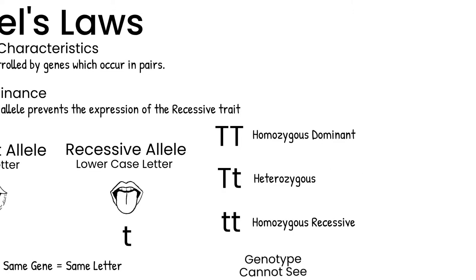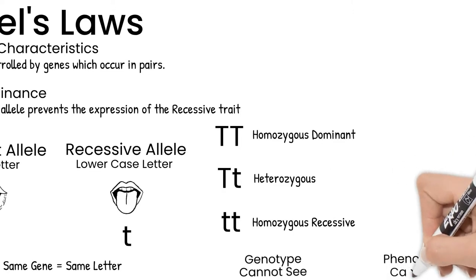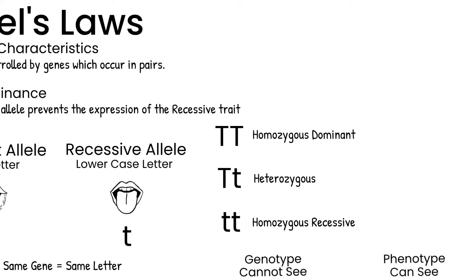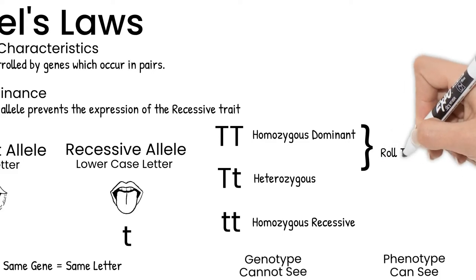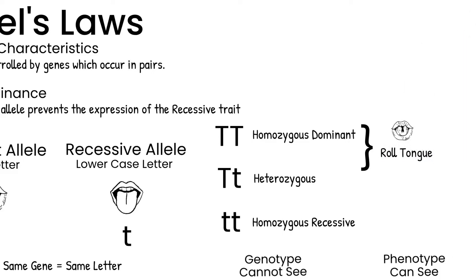A phenotype you can see — the phenotype is the trait that shows. Looking at our three genotypes, two of them would have the phenotype of being able to roll their tongue. They have the dominant allele to roll their tongue, and it overpowers the recessive, if it's there.